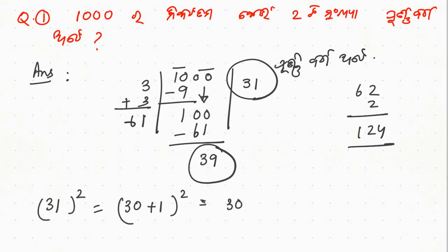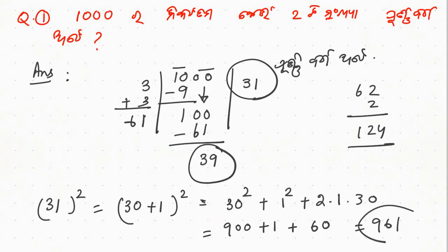So we have to say that the formula is 30 plus 1. So it is 30 squared plus 1 squared plus 2 into 1 into 30. So we have to say that it is 900 plus 1 plus 60.